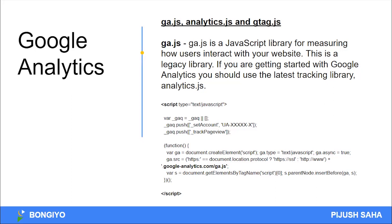Definitely, Google Analytics 4 and the future — we can use gtag.js. We can focus on the API, which is gtag.js. There is a code snippet, there is a file section. We know that these codes are placed in the header. We can see it practically and see that our website has a direct impact.